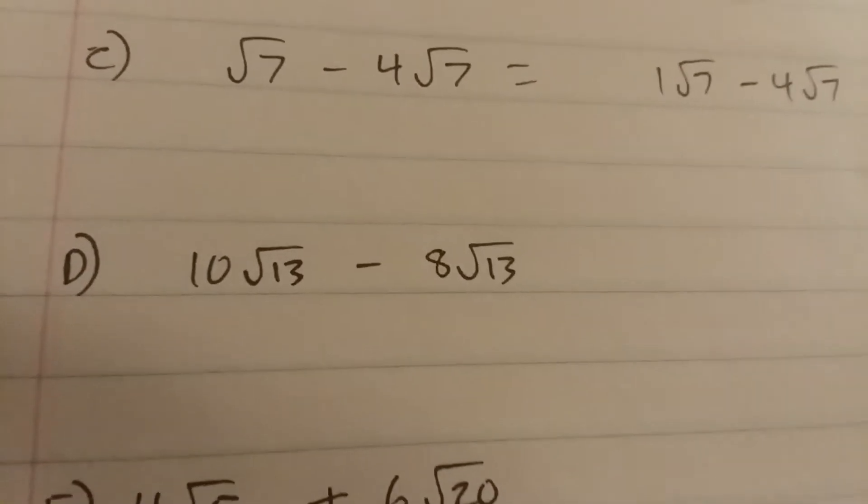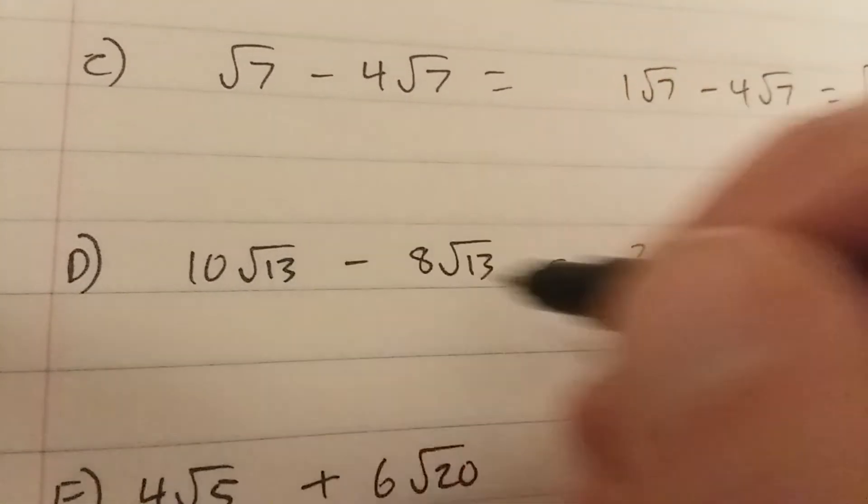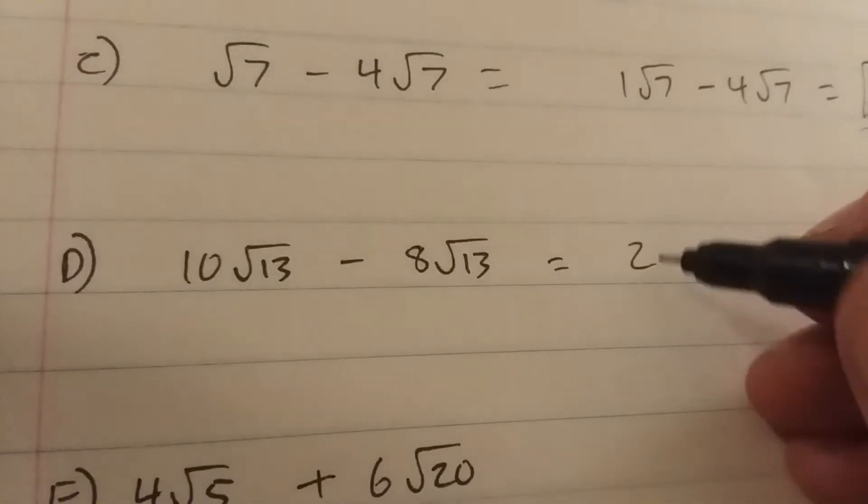Next one, just like c. 10 minus 8 is 2, and the square root of 13 just comes over.